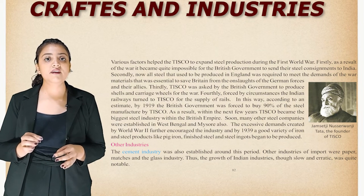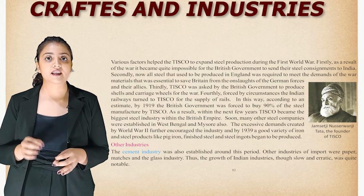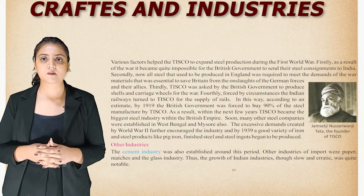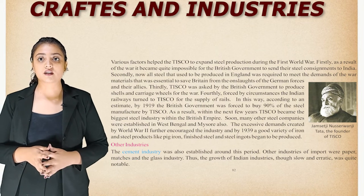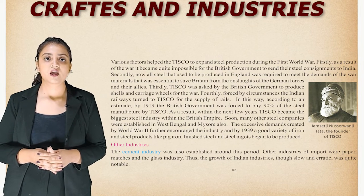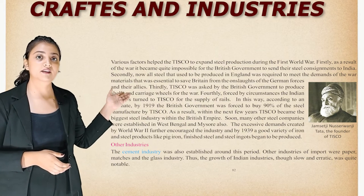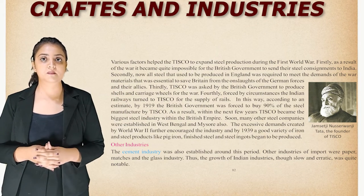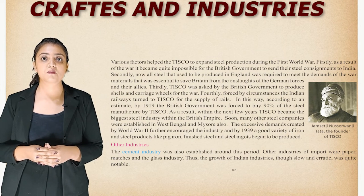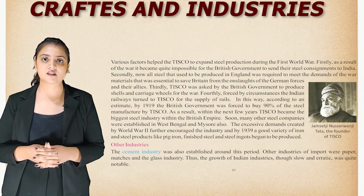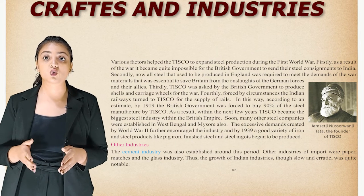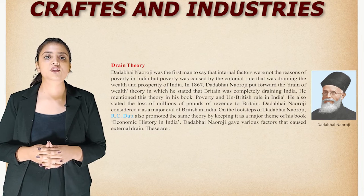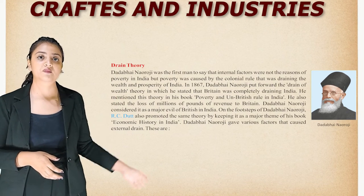The excessive demands created by World War Two further encouraged the industry, and by 1939 a good variety of iron and steel products like pig iron, finished steel, and steel ingots began to be produced. The cement industry was also established around this period. Other industries of importance were paper, matches, and glass. Thus the growth of India's industries, though slow and erratic, was quite notable.